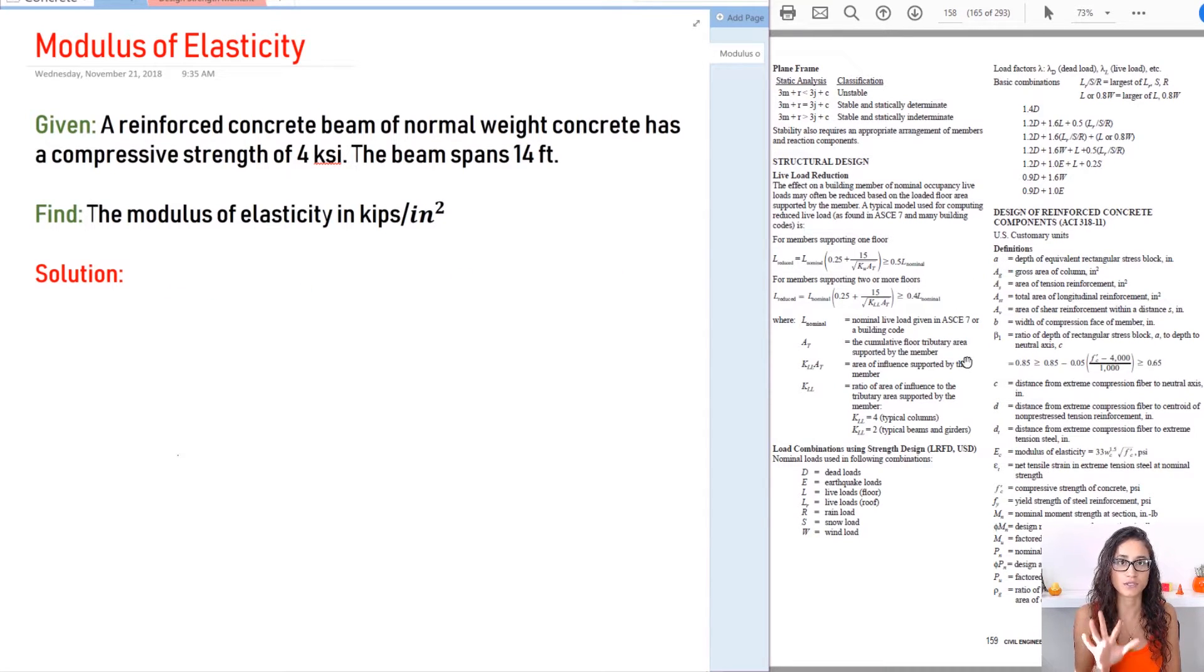If you look at the FE handbook, the concrete section is usually under civil engineering and starts at page 159. Here we have the definitions and if you come down here you see Ec which is the modulus of elasticity and they give you the equation. The equation is not given under the section where they usually give equations—it's actually under definitions and that's why a lot of people have a hard time finding it.